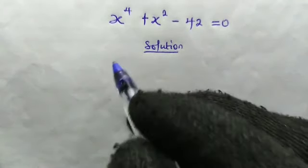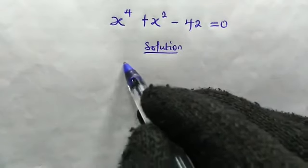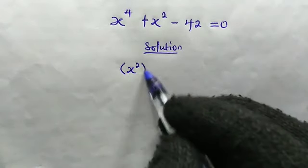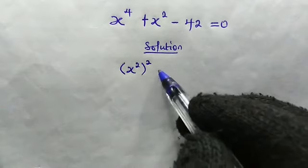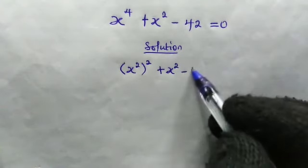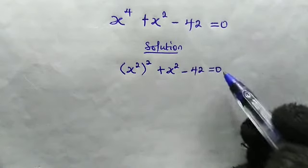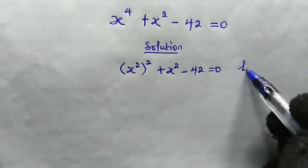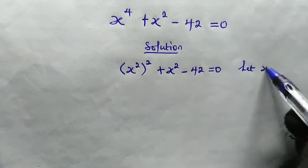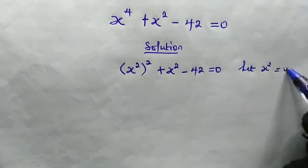Now x to the power of 4, we can write it as x to the power of 2 raised to the power of 2. Then, plus x squared minus 42, this is equal to 0. Now we're going to make the following substitution. We're going to let x squared equals y.